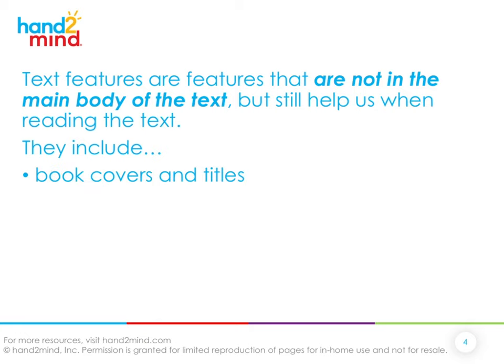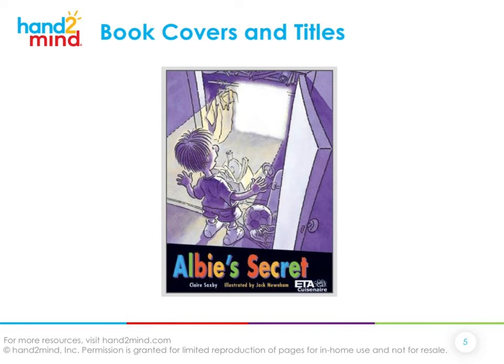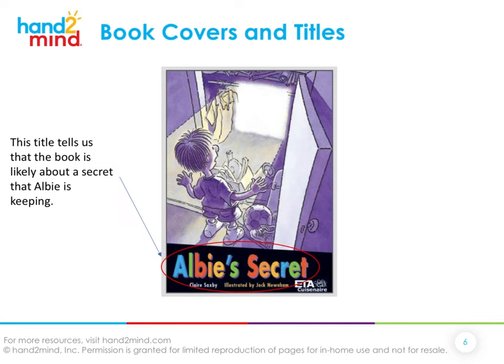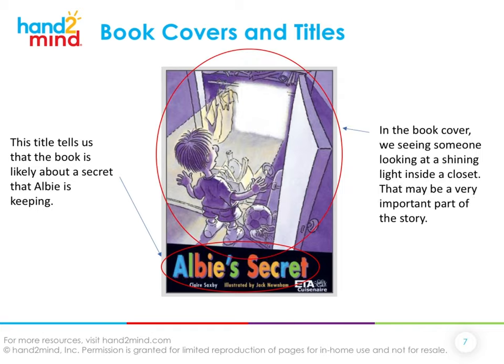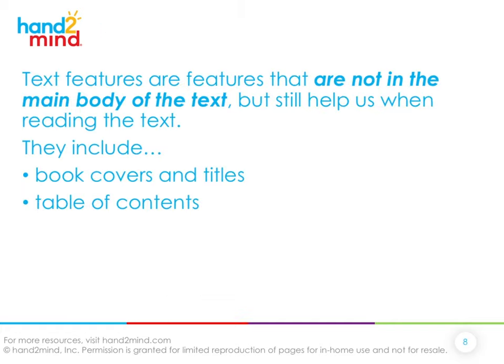For instance, with this book cover and title, we see the title tells us the book is about Albie keeping a secret. Then we can see the cover showing somebody looking at a shining light inside a closet, so that's going to be a very important part of the story — or we can assume it probably will be.